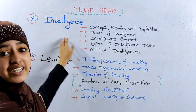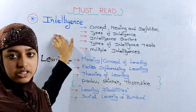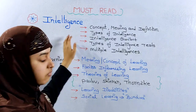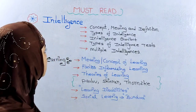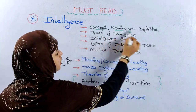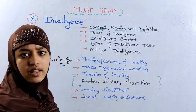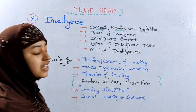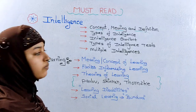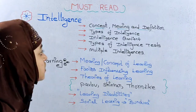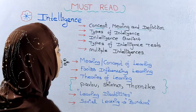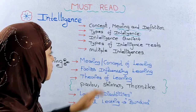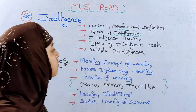Next is intelligence. Intelligence chapter — growth, development, and maturation is a very important topic. In this chapter, we have to choose very important sub-topics: meaning, concept, and definition of intelligence. Types of intelligence are also very important.